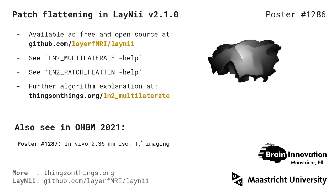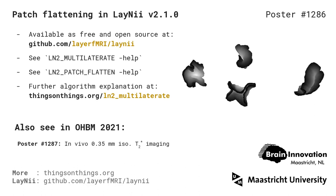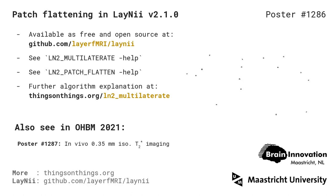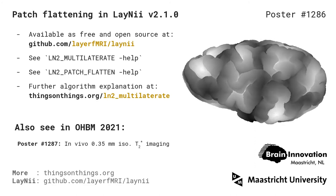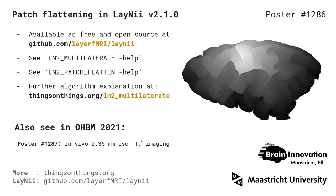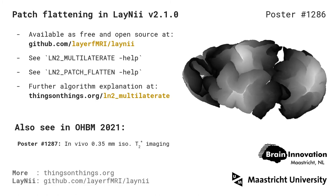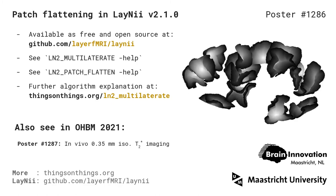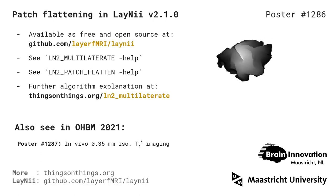Patch flattening in Lany is available as free and open source code at the GitHub layer-fmri Lany repository. You can see the LN2 multilaterate help menu or LN2 patch flatten help menu when you have installed Lany. Further algorithm explanation is available at the following link. Also see in OHBM my other poster, which involves 0.35 mm isotropic T2-star imaging in combination with the methods developed and implemented in Lany. Thanks.